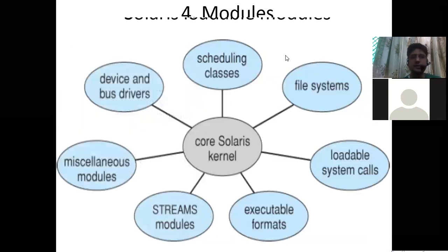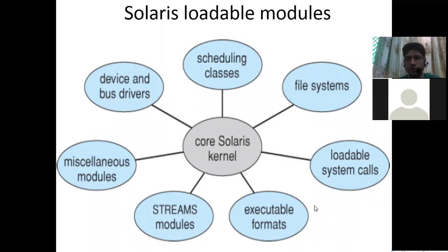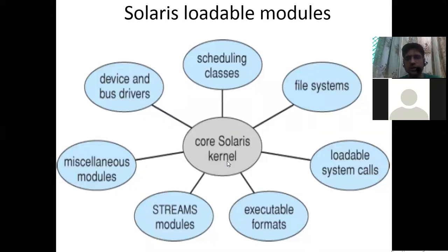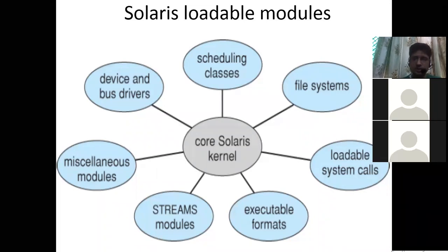Here is a simple diagram of the module structure of an operating system using the Solaris example. We have a core Solaris kernel with scheduling classes module, file system module, loadable system calls module, executable formats module, streams module, miscellaneous modules, and device and bus drivers modules. All these modules can directly communicate with each other. Solaris is an operating system designed on the module structure. These diagrams are marks boosters in examinations, so please prepare them well.